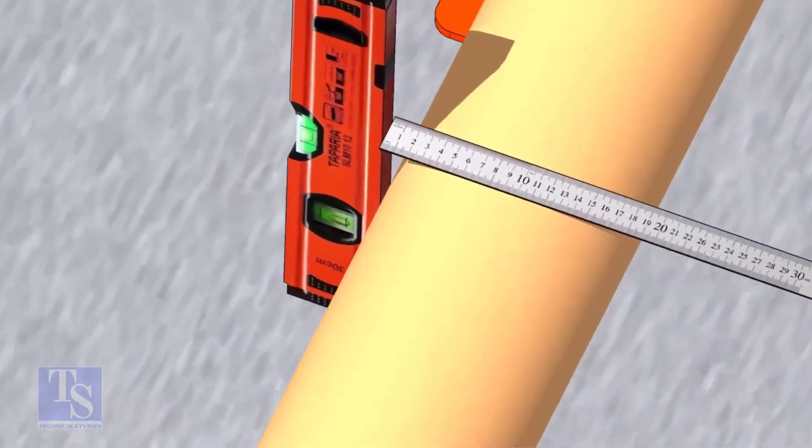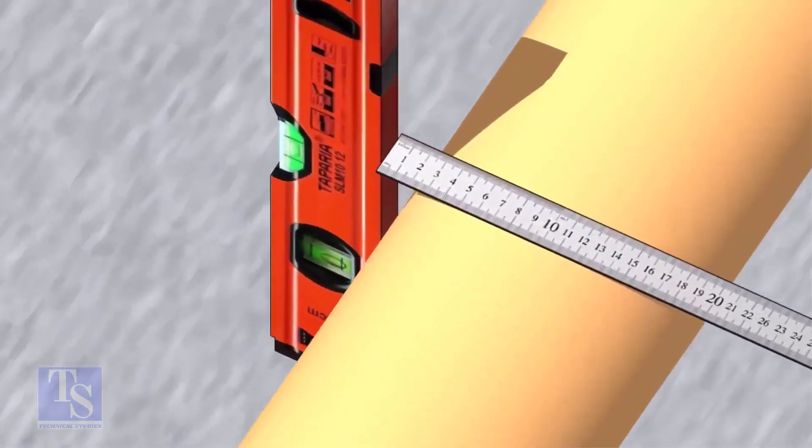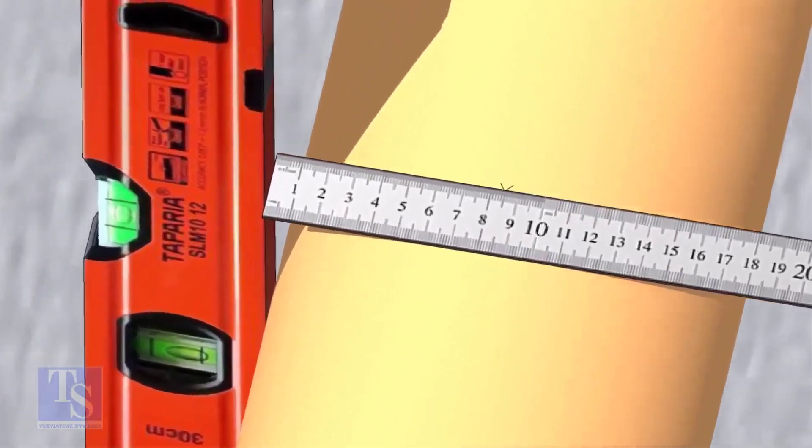OD of a 6 inch pipe is 168 mm, so mark the half OD 84 mm as shown.